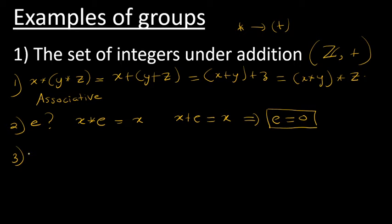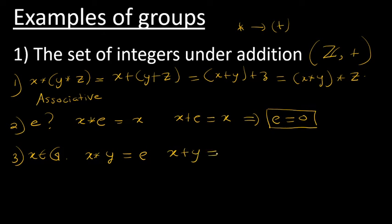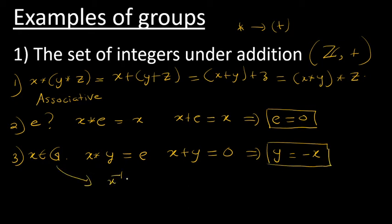Let's take any element x from G and find its inverse y. From the property of the inverse, if y is the inverse of x, then x star y should equal the identity. So x plus y equals zero, which gives y equals minus x. Therefore the inverse of any element x in the group of integers under addition is minus x.